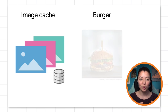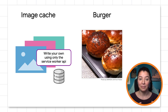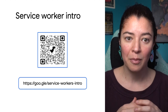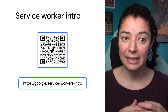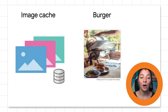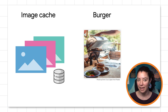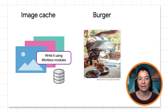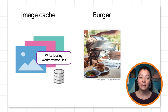If we compare managing our image cache with cooking a burger: option one, you cook — make the patties and the buns from scratch. That is the equivalent of implementing the cache with just the service worker API. Option two, you can buy the buns and patties pre-made and assemble your burger. That is like creating the image cache with the Workbox libraries, which give us flexibility, but the code can still be repetitive.